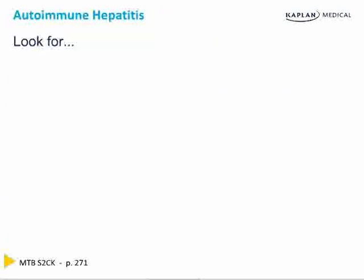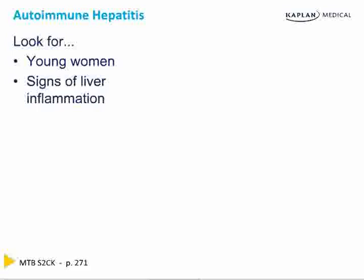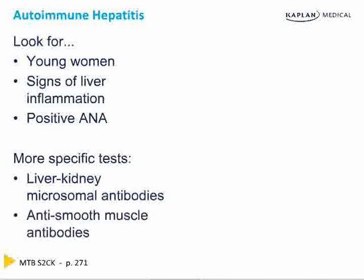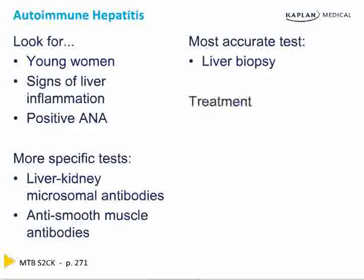In autoimmune hepatitis, look for a young woman with signs of liver inflammation and a positive ANA. The two antibodies you need to know are the liver-kidney microsomal antibody and the anti-smooth muscle antibody. The most accurate diagnostic test is a liver biopsy. Treatment is with prednisone and/or azathioprine.